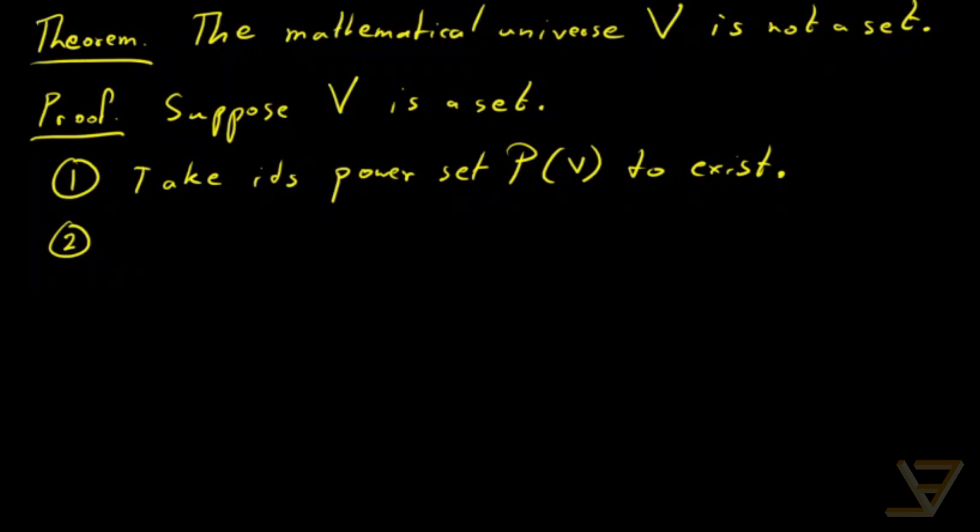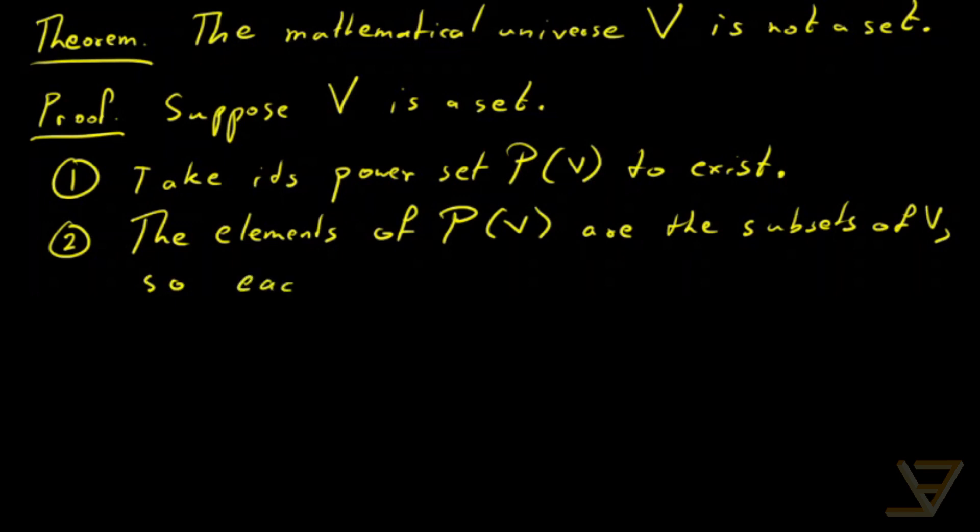What we observe now is that the elements of the power set of V are the subsets of V. So they're all sets. So that means that each element of the power set of V is a set. This is going to come in handy in just a moment.